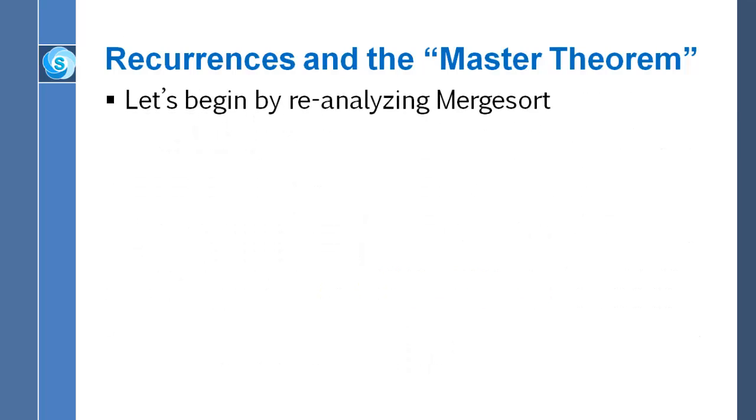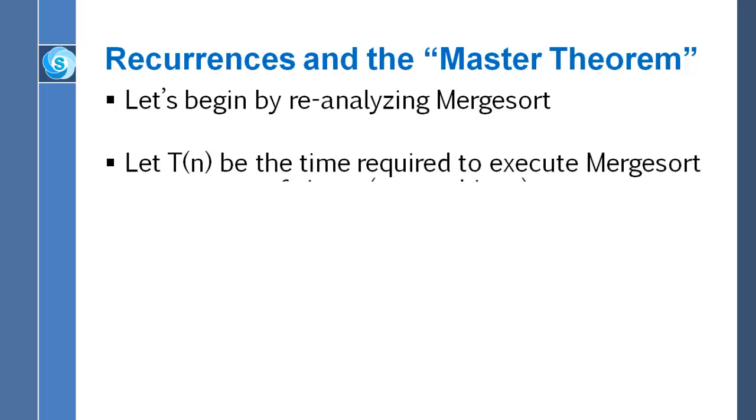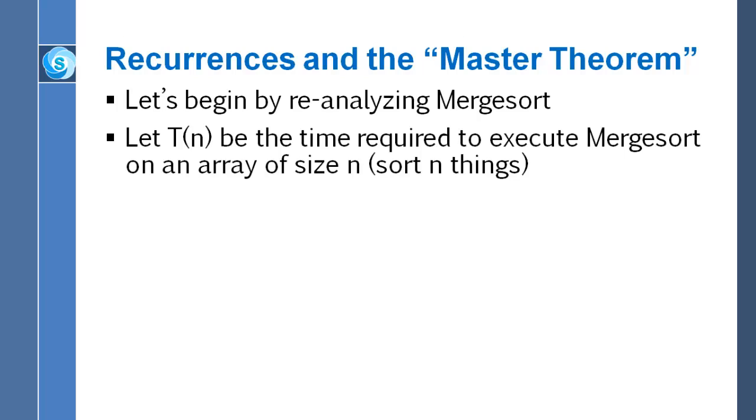So let's study merge sort with a fresh eye here. Capital T of N refers to the execution time for merge sort when it's used to sort an array of size N.